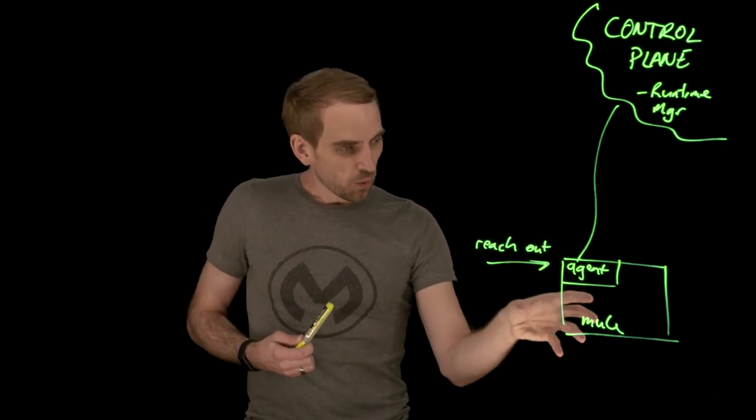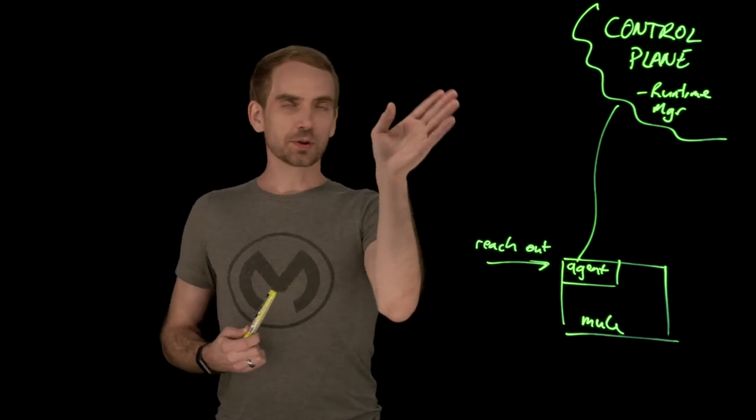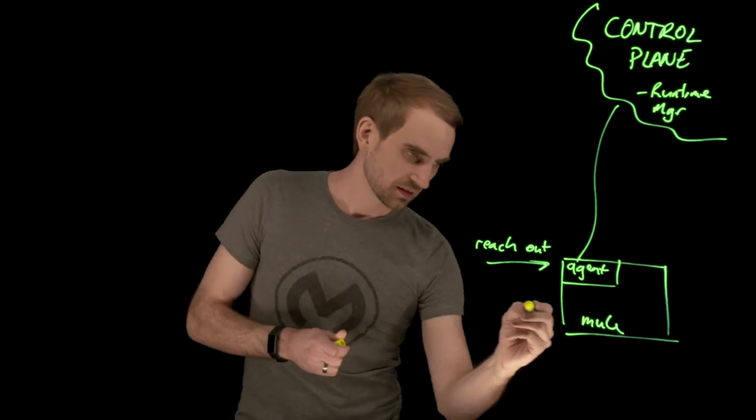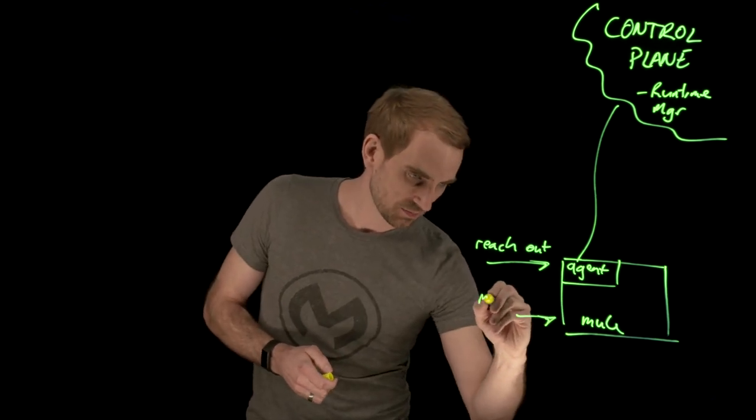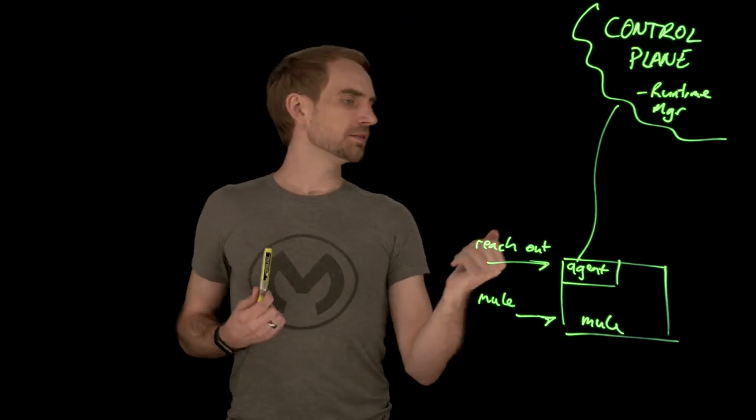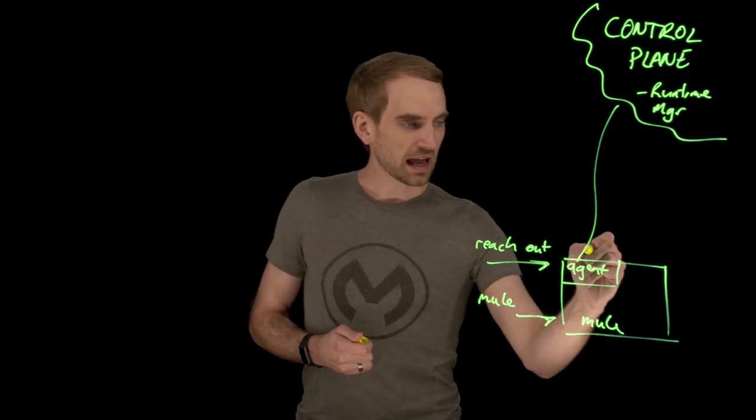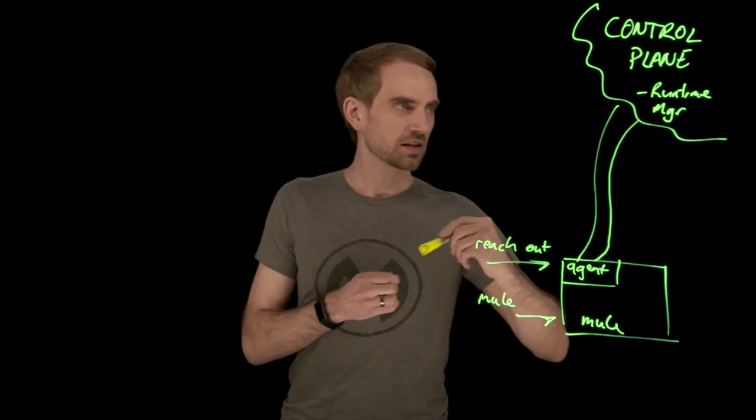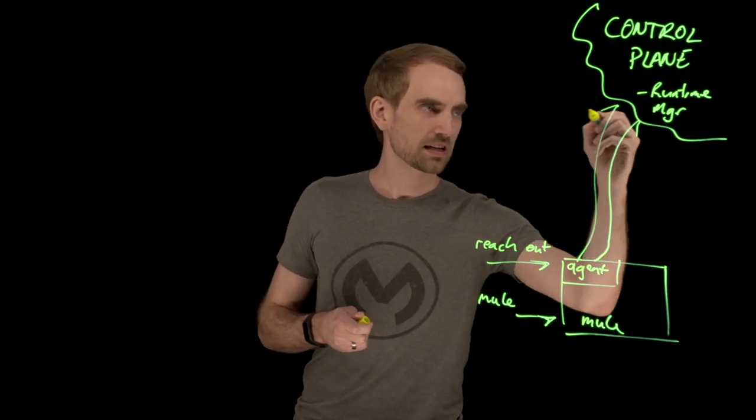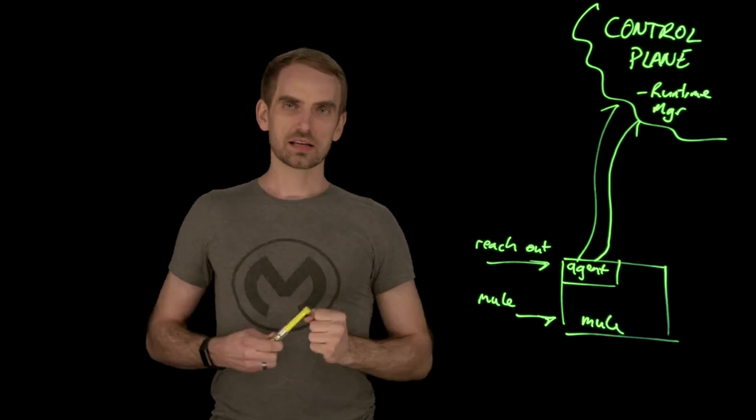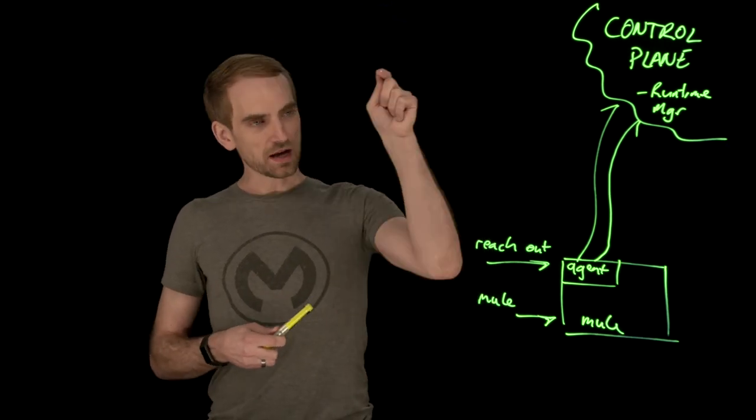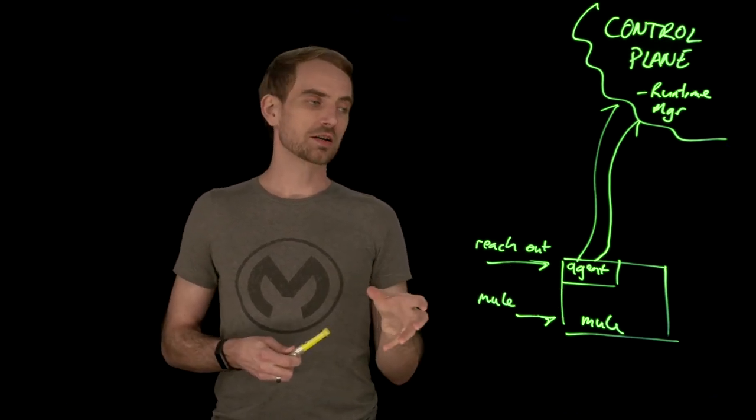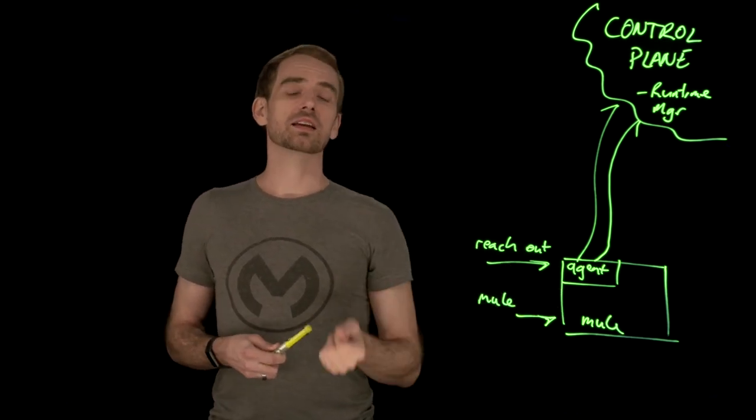But from that point onwards it's only going to be able to be deployed to when the Mule runtime is fired up. So you need to start up Mule. You run the Mule command that will fire up Mule and then the agent opens up a secure web socket. Now it's important to note that the direction of this is out of your ecosystem. So you don't have to punch holes through the firewall to get to your Mule runtime in order to manage it.